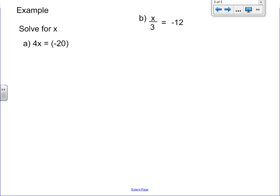If we look at this first example, we have 4x equals negative 20. The 4x is actually, if we think of it, 4 times by x. When we do these equations, we're allowed to do anything we want to the equation, as long as you do it on both sides.